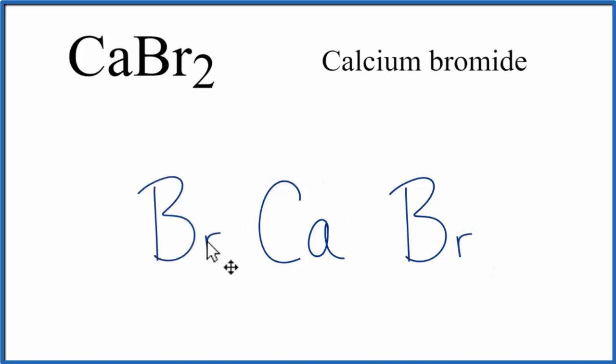Calcium is a metal and then bromine, that's a nonmetal. So we have a metal bonded to two nonmetals, that's an ionic compound.